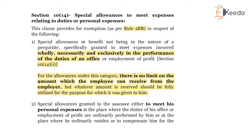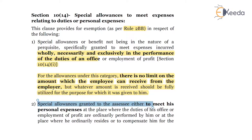There will be no limit on the allowances that an employee will receive; however, the exemption will be available only if the amount is expended by the employee for the purpose for which it has been granted. The second category, section 10(14)(2), covers special allowances granted to the employee either to meet his personal expenses at the place where the duties of his office are ordinarily performed or to compensate him for the increased cost of living.